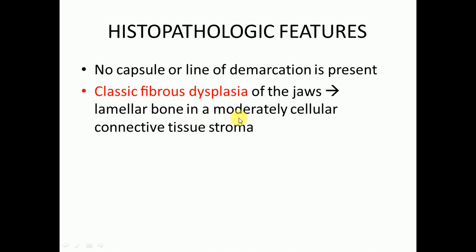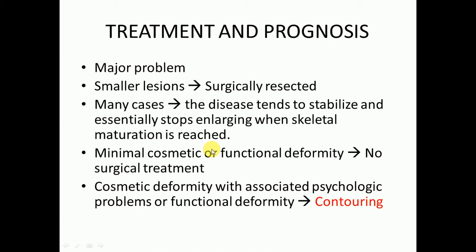In classical fibrous dysplasia of the jaws, lamellar bone in moderately cellular connective tissue stroma will be present. Regarding treatment and prognosis, if the lesion is smaller it can be surgically resected. In many cases the disease tends to stabilize and essentially stops enlarging when skeletal maturation is reached.